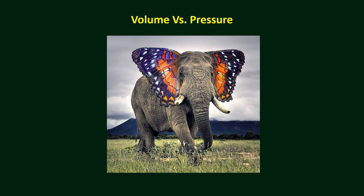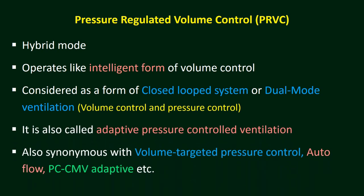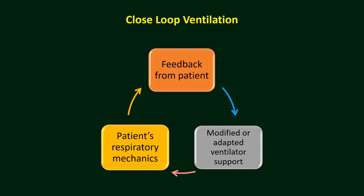That option is available in pressure regulated volume control. It is a hybrid mode that operates like an intelligent form of volume control. It is considered a form of closed loop system or dual mode. It is also called adaptive pressure control ventilation, and is synonymous with volume targeted pressure control, autoflow, PC-CMV, and adaptive, among other names depending on the manufacturer.